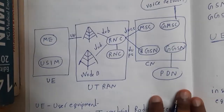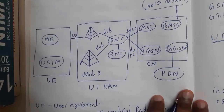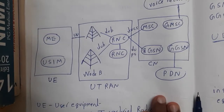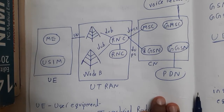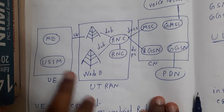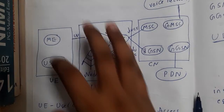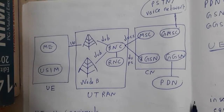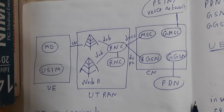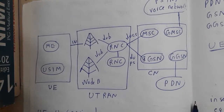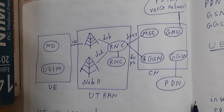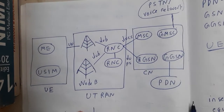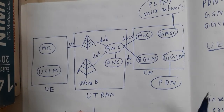The UMTS architecture looks like the GSM architecture with some small modifications. Let us first observe the architecture, then I'll give you an example, and then we'll move on to the theory.